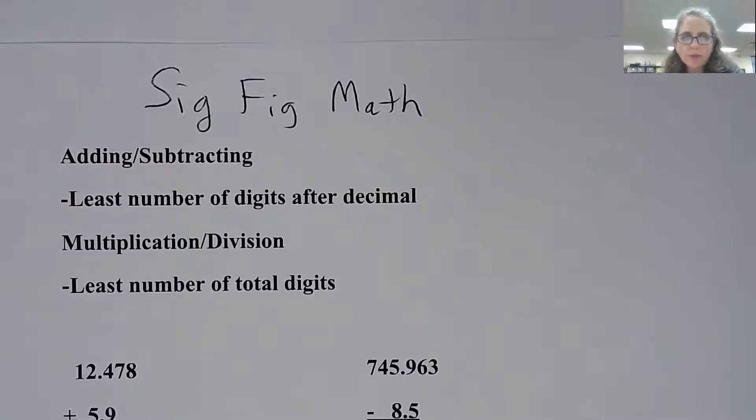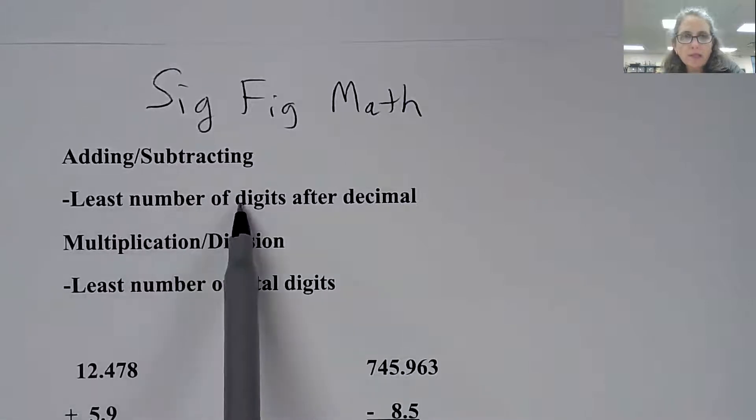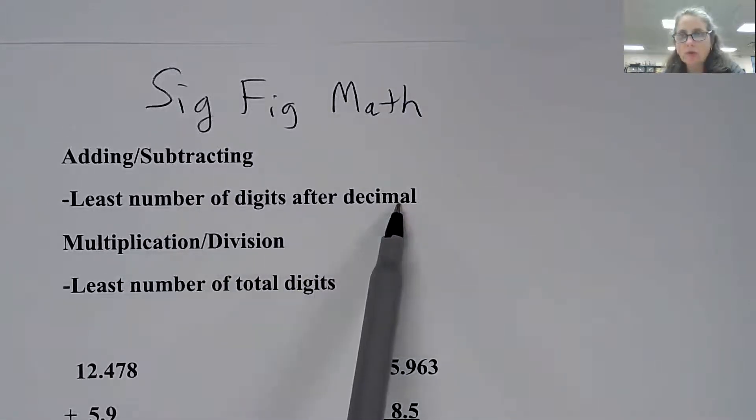Please know I interchange those terms. So the rule is there are two rules. If I'm adding and subtracting numbers, I'm going to take the least number of digits after the decimal. And I'm going to show you a few examples here so you can take a look at that.